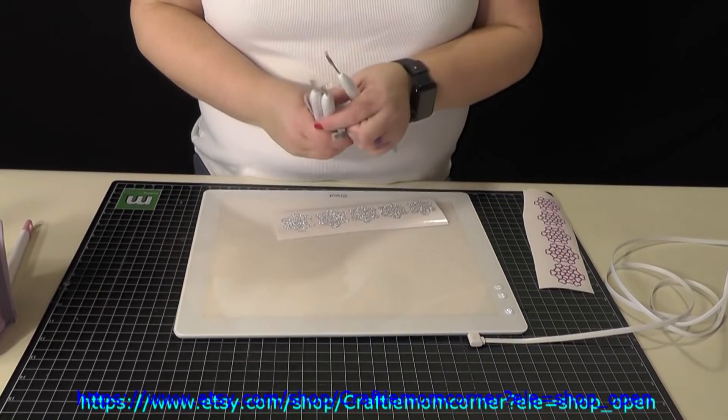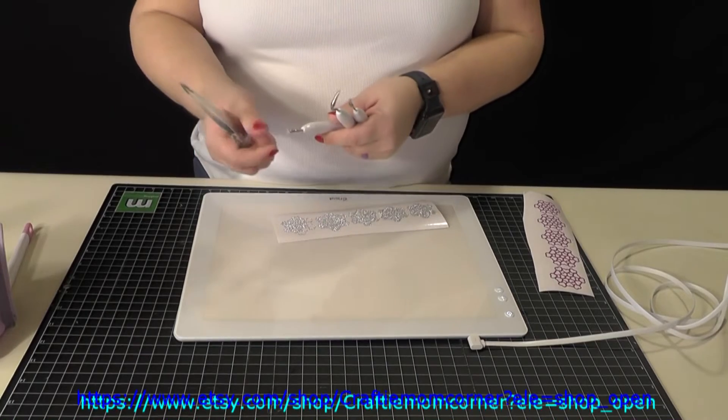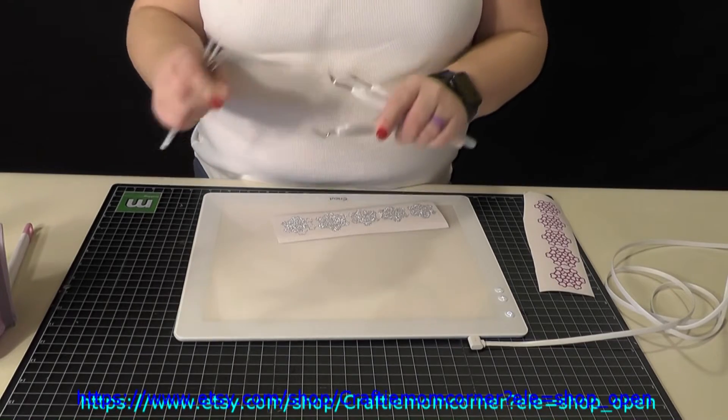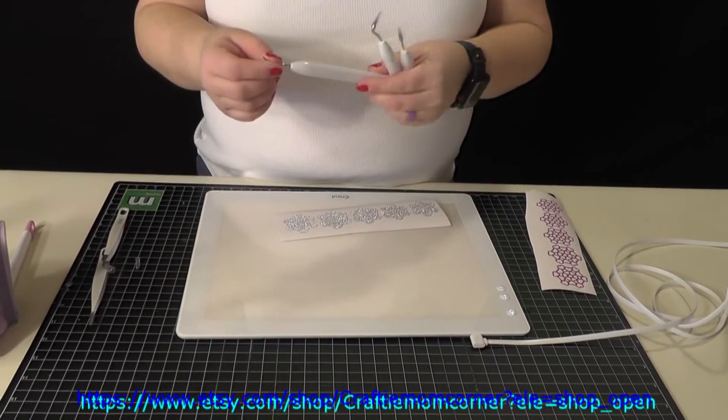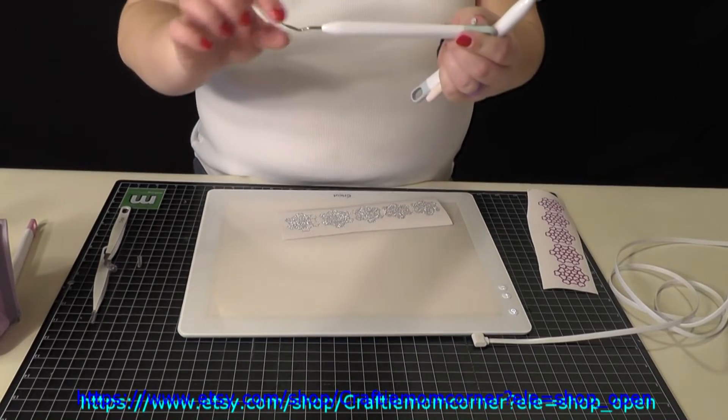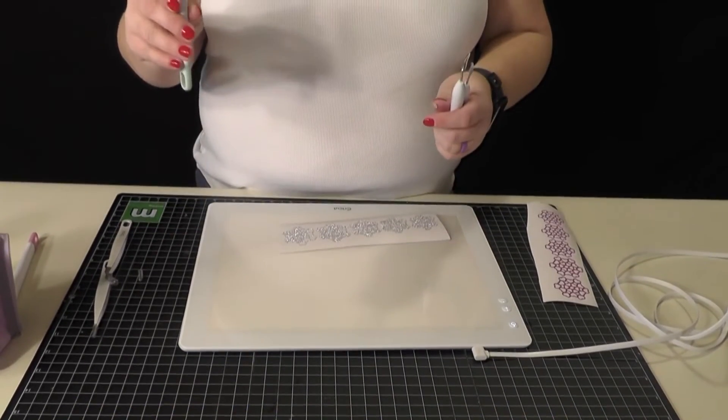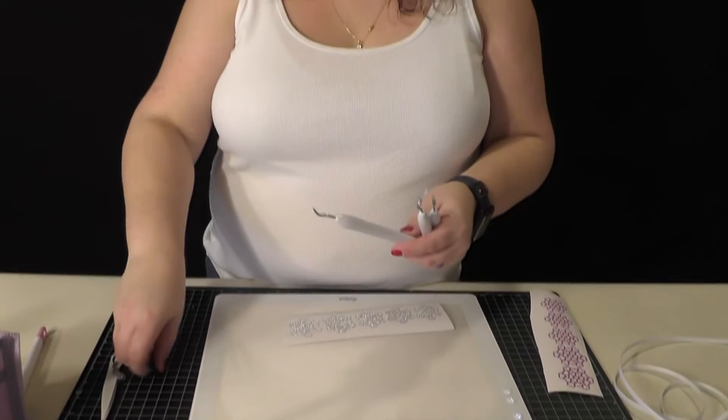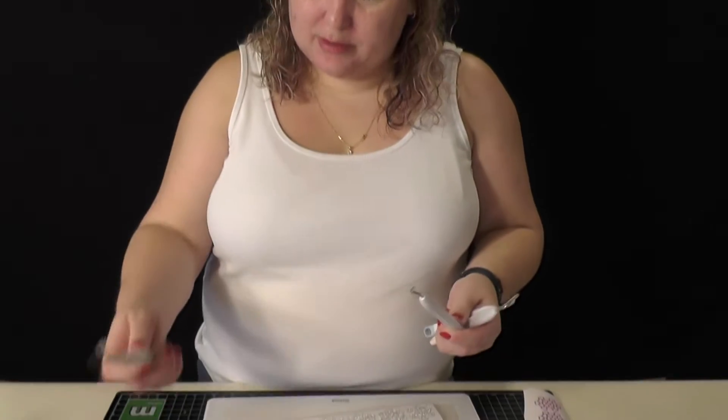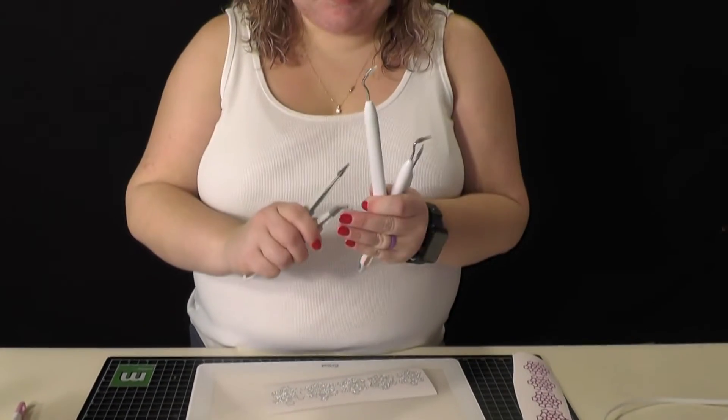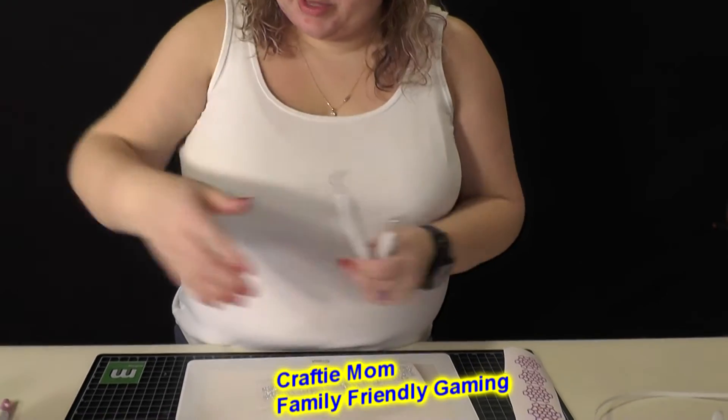The weeding tool set has three different size tips that have a little sharp point so you can pull the little spaces out in between. Then it has two different types of tweezers, but I set all these over here out of my way.